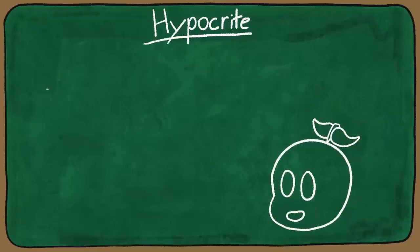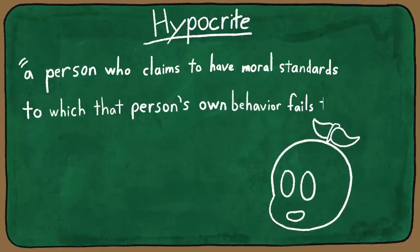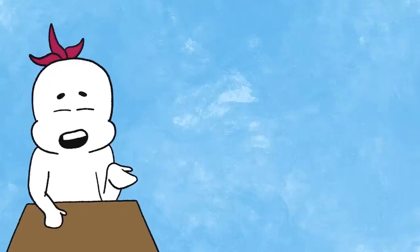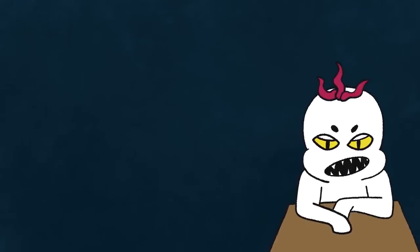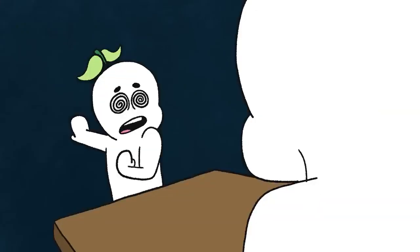The definition of a hypocrite is a person who claims to have moral standards to which that person's own behavior fails to conform. So when someone exhibits this contrary behavior, it can lend itself to some strong emotions, like feeling tricked.